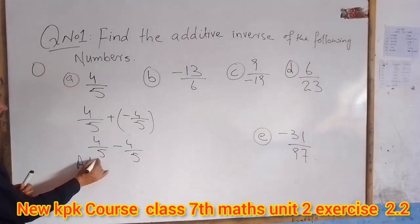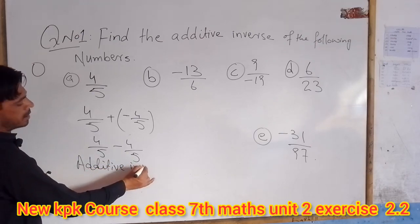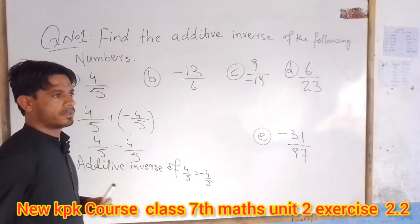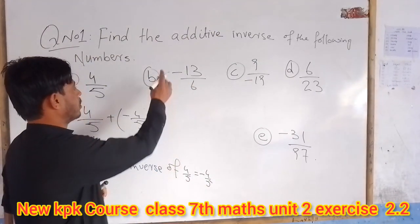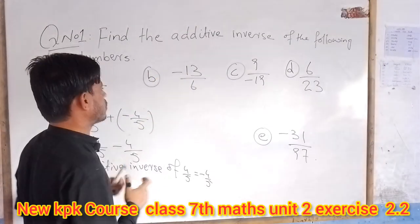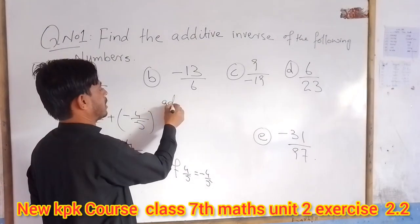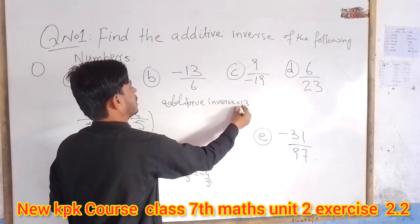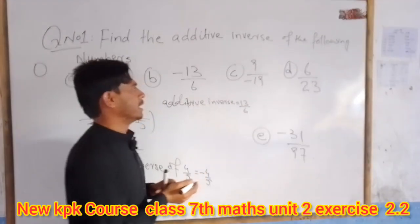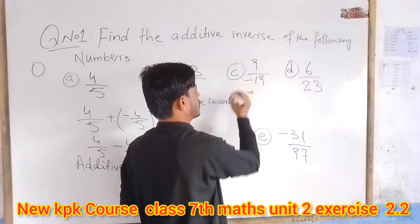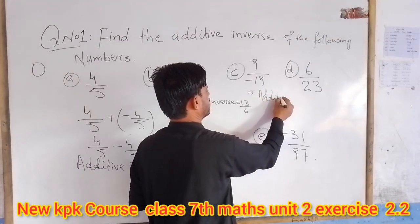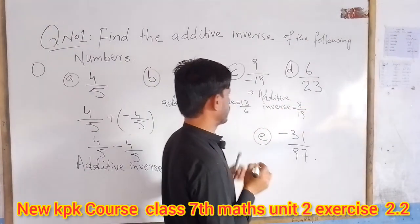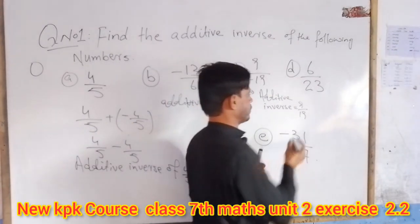The additive inverse of 4 divided by 5 is equal to minus 4 divided by 5. We will see number 4: minus 13 divided by 6. The additive inverse of minus 13 divided by 6 gives result zero, so the additive inverse is plus 13 divided by 6. Also, 9 divided by minus 19: the additive inverse is plus 9 divided by plus 19. Part D: 6 divided by 23; additive inverse is minus 6 divided by 23.